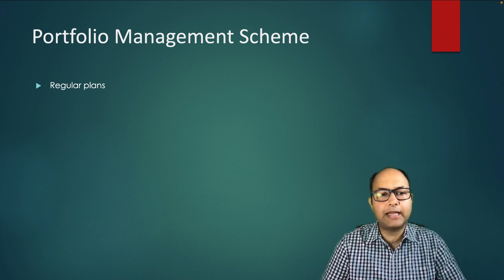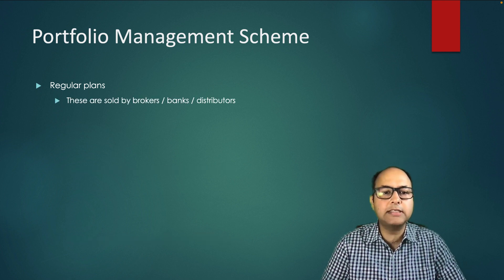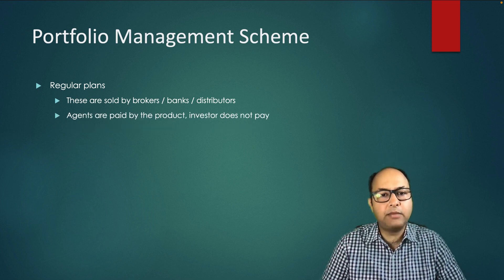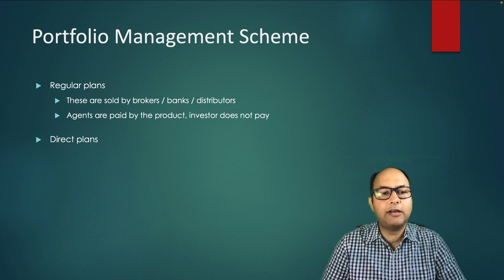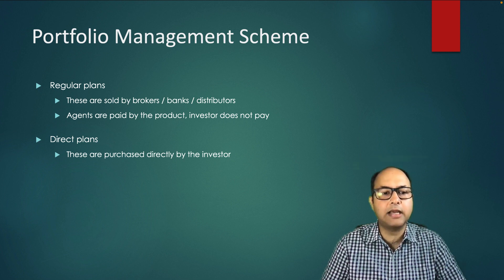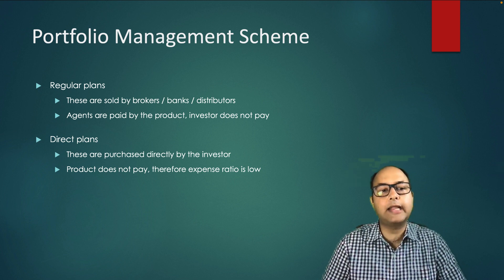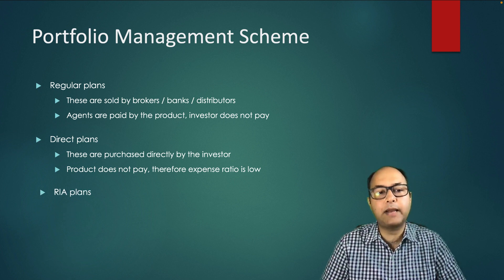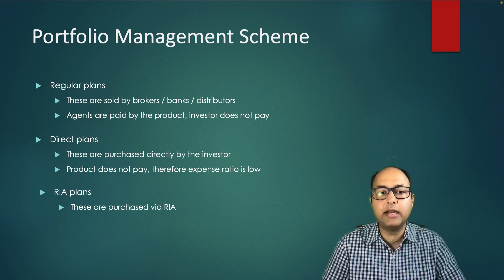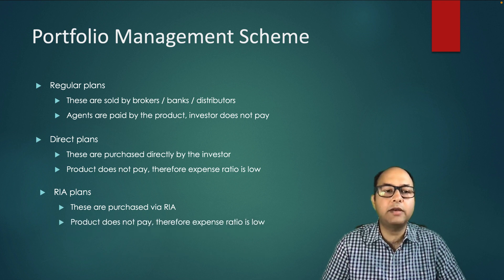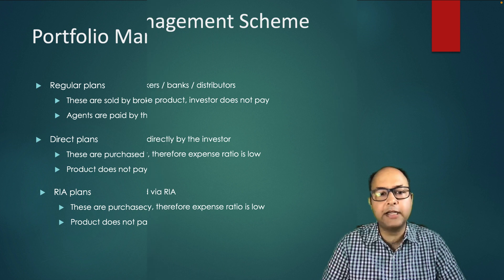Earlier, only regular plans were available in PMS, sold by brokers, banks, or other distributors. Then direct plans were introduced, where an investor can directly purchase from the PMS company and the product does not pay to agents, keeping the expense ratio low. In PMS there is also a third category called RIA plans, which can only be purchased through an RIA — the RIA code goes in the purchase — and that's why the expense ratio is low.